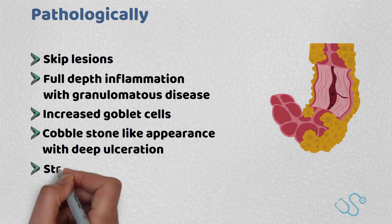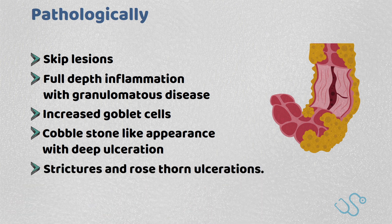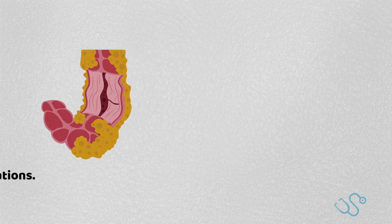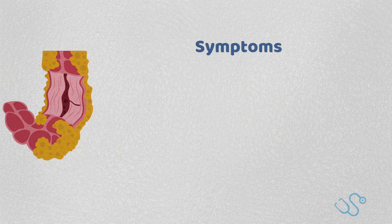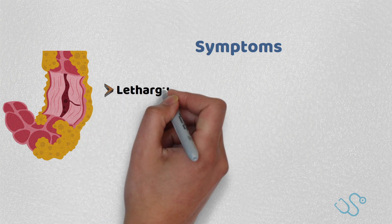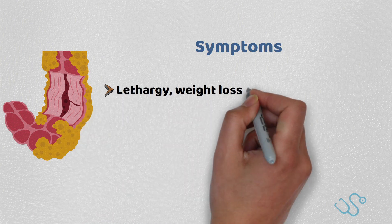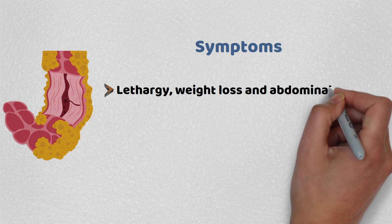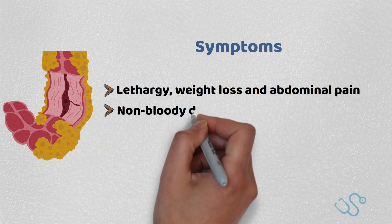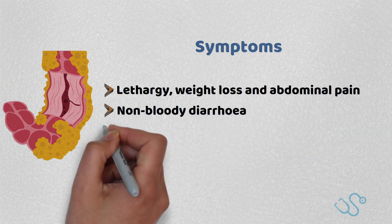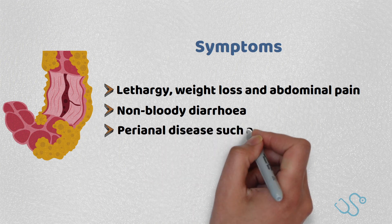Radiologically, typically on small bowel enemas, there might be possible strictures and rose-thorn ulcerations. Symptoms of presentation slightly vary to UC, with features often being quite vague, including lethargy, weight loss and abdominal pain. Patients often have non-bloody diarrhoea but can also present with perianal disease, such as ulceration or skin tags.